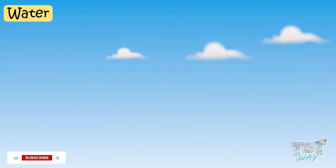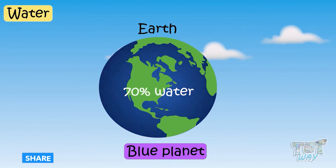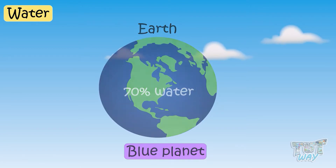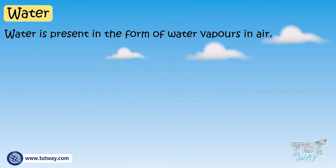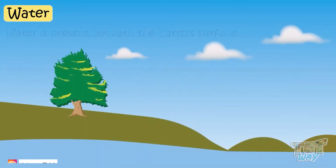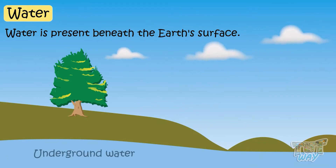Our planet, the Earth, is called the Blue Planet, because 70% of the Earth's surface is covered with water. So a big part of the environment is water. Even in the air, water is present in the form of water vapors, and water is present beneath the Earth's surface too, and that water is called underground water.